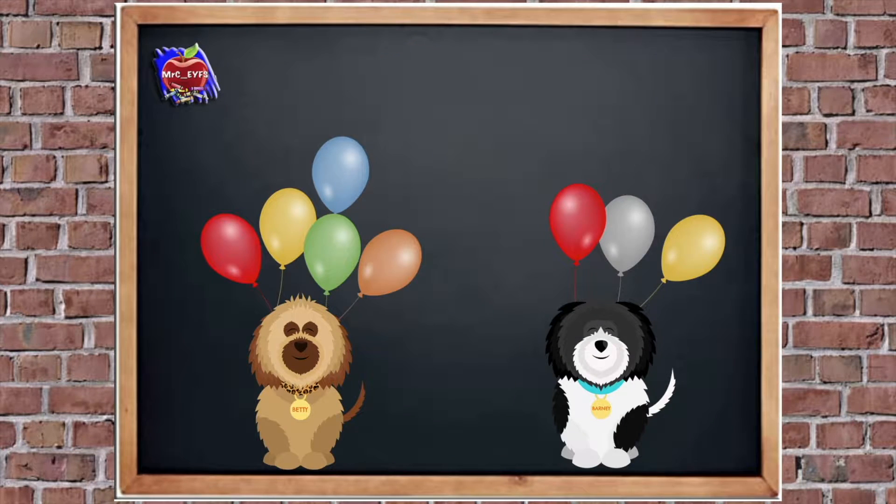Betty and Barney have got some balloons. How many balloons does Betty have? So can you count them? Excellent. Let's do it together. There's one, two, three, four, five. Well done.